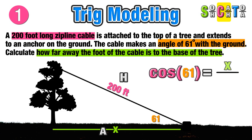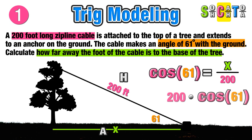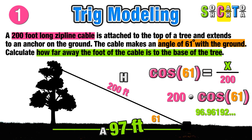The cosine of 61 degrees equals x over 200. Since x is on top of the fraction, we multiply 200 times the cosine of 61, which equals approximately 96.96, which we round to 97 feet — the distance between the foot of the tree and the base of the zipline cable.